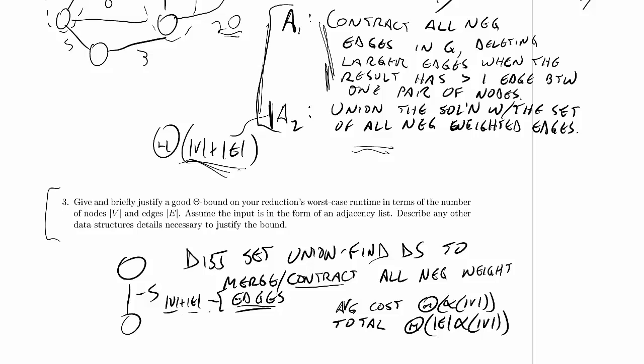So we're spending V + E + E times the inverse Ackermann function of V time so far. At this point we have a mapping — for example, V1 and V2 are in group 1, V3 is in group 2, V4 is in group 3, and V5 is in group 2 — which is what we get from using the disjoint set union-find data structure. What we haven't done yet is eliminated the more expensive duplicate edges or restructured our adjacency list.